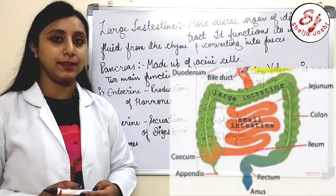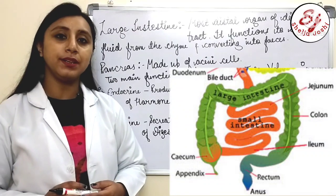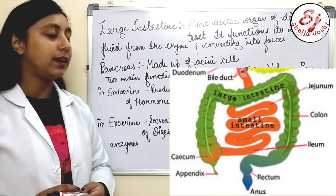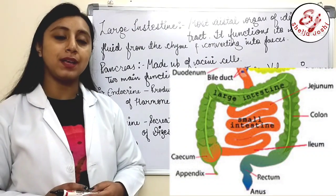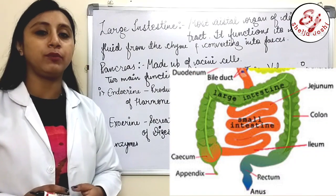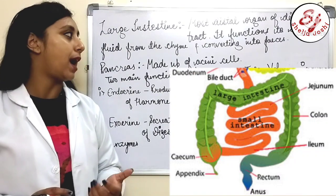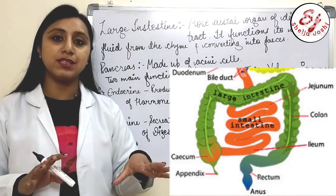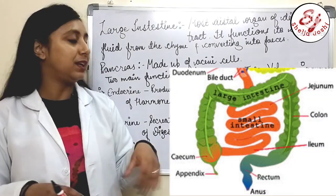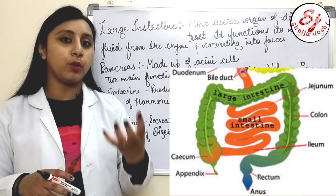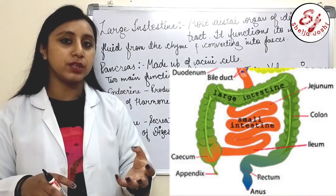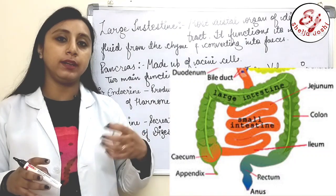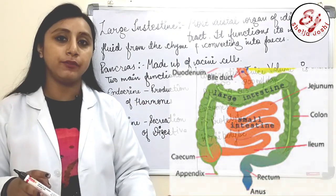The large intestine is a distal organ of the digestive tract. Its main function is to absorb water from the chyme. It plays an important role in digestion and converts the remaining material into feces.